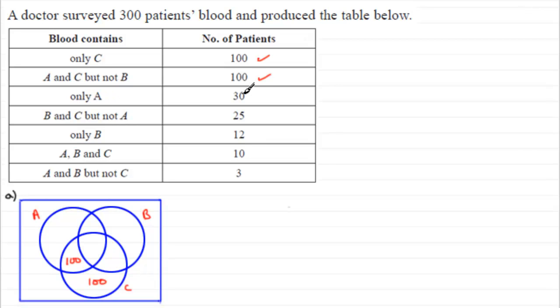Now what about this one? Only A, 30. Well only A has got to be just this region in here. So that's got to be 30.